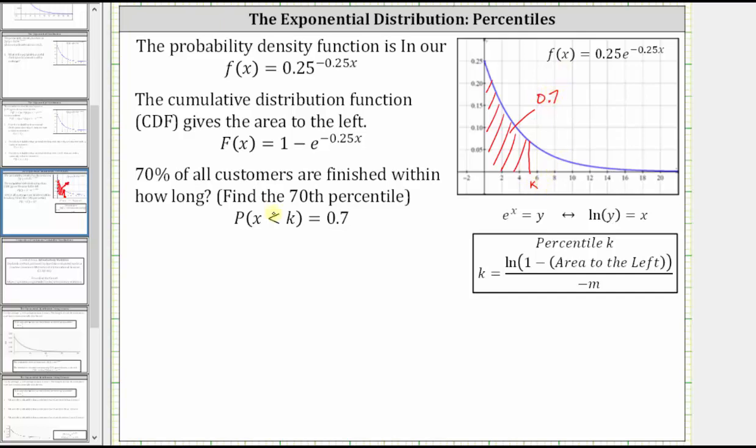So we can say the probability that X is less than k is equal to 0.7. And since this is the area to the left of k, it must equal 1 - e^(-0.25k).